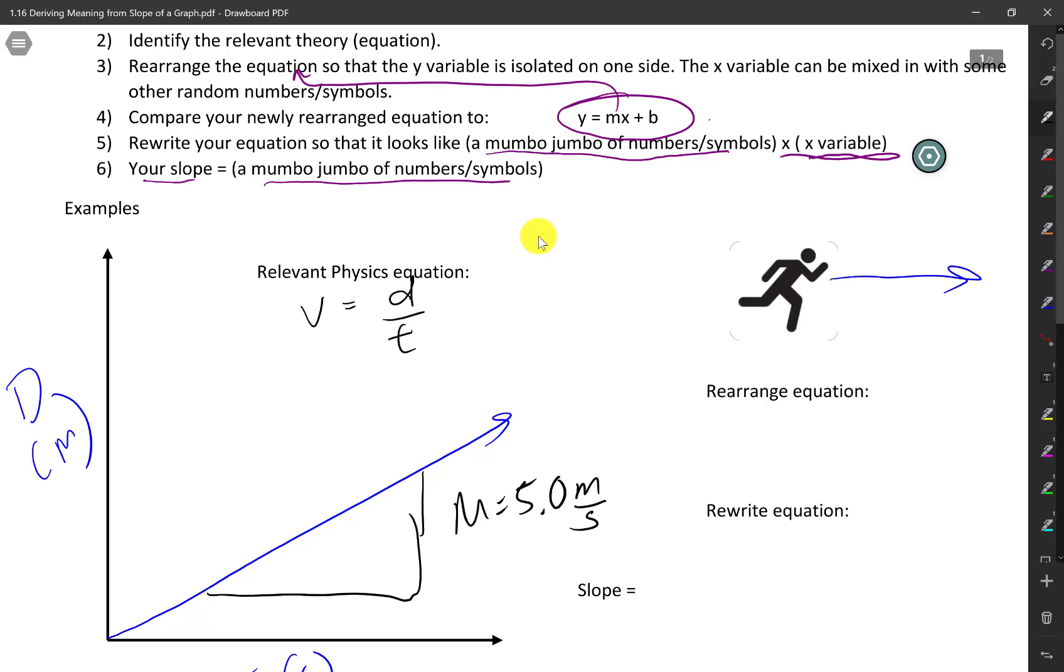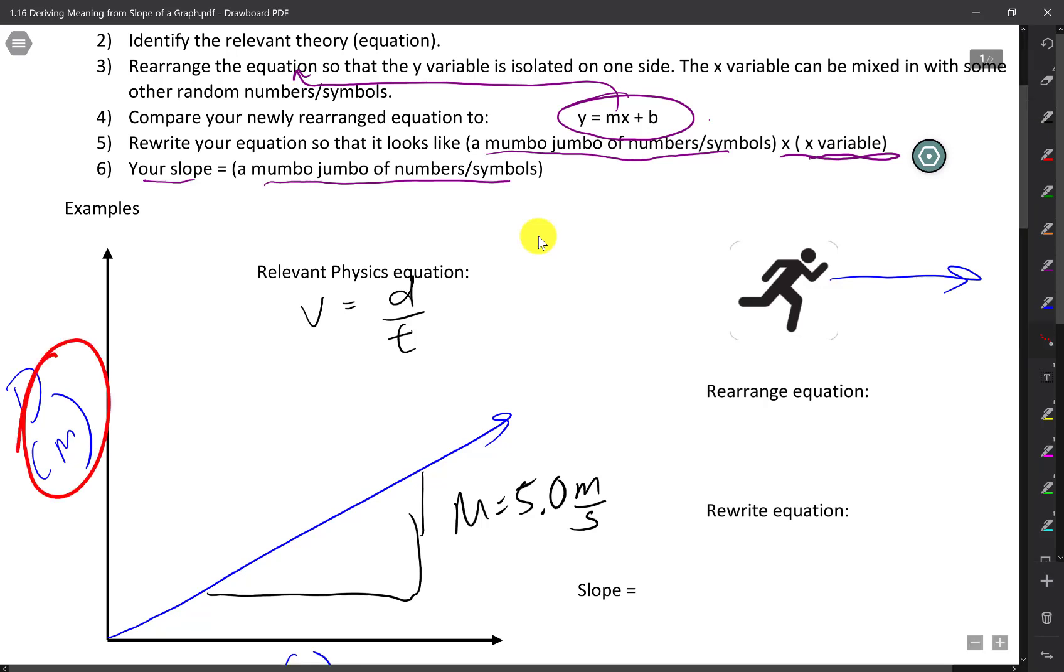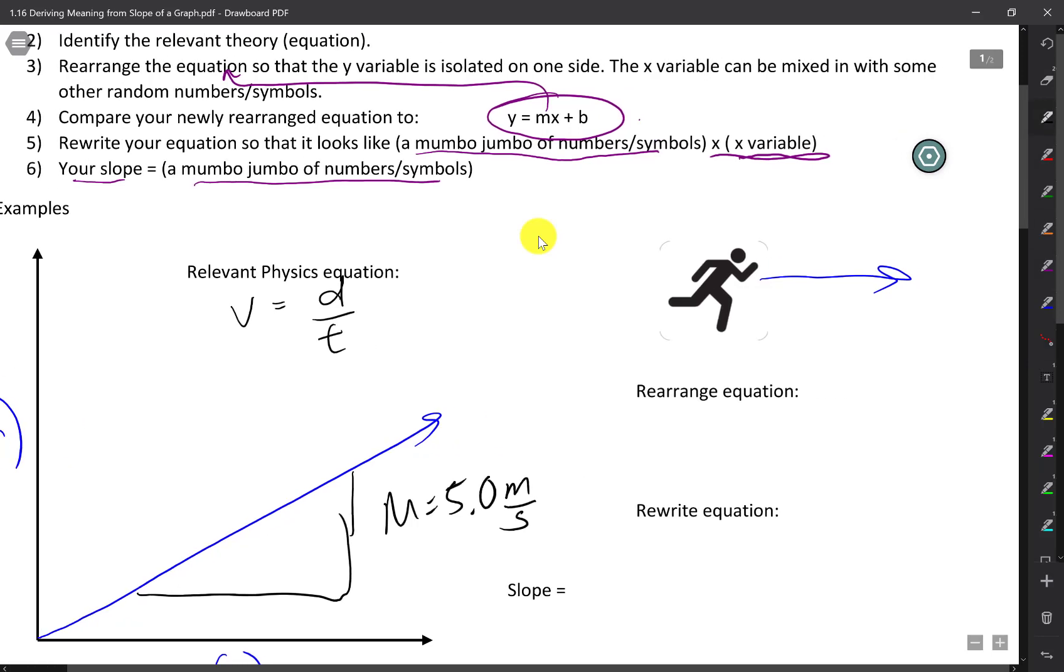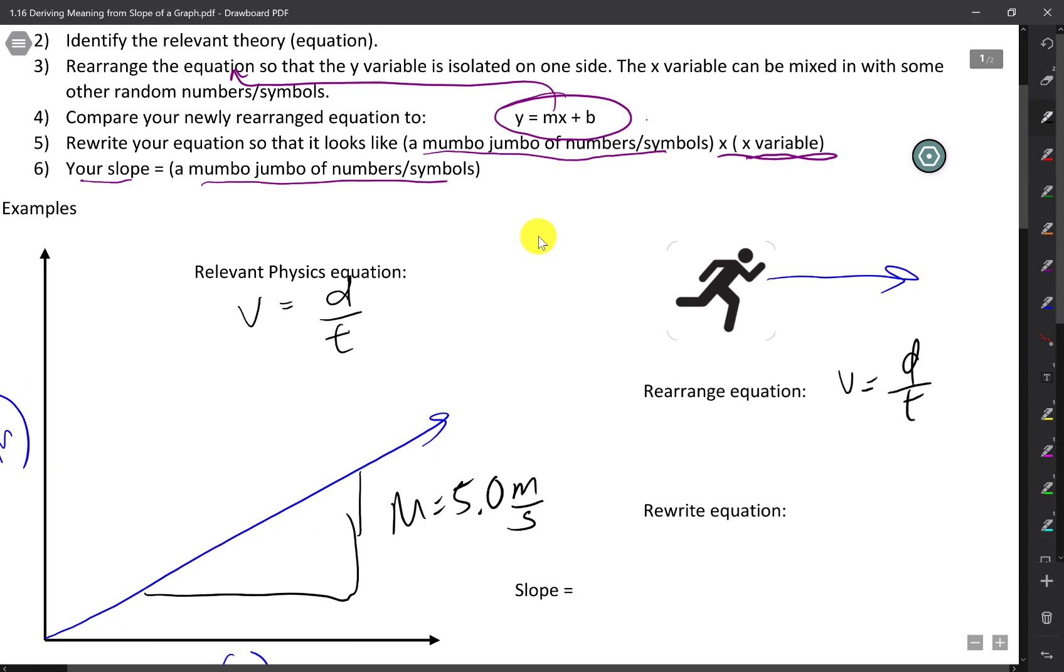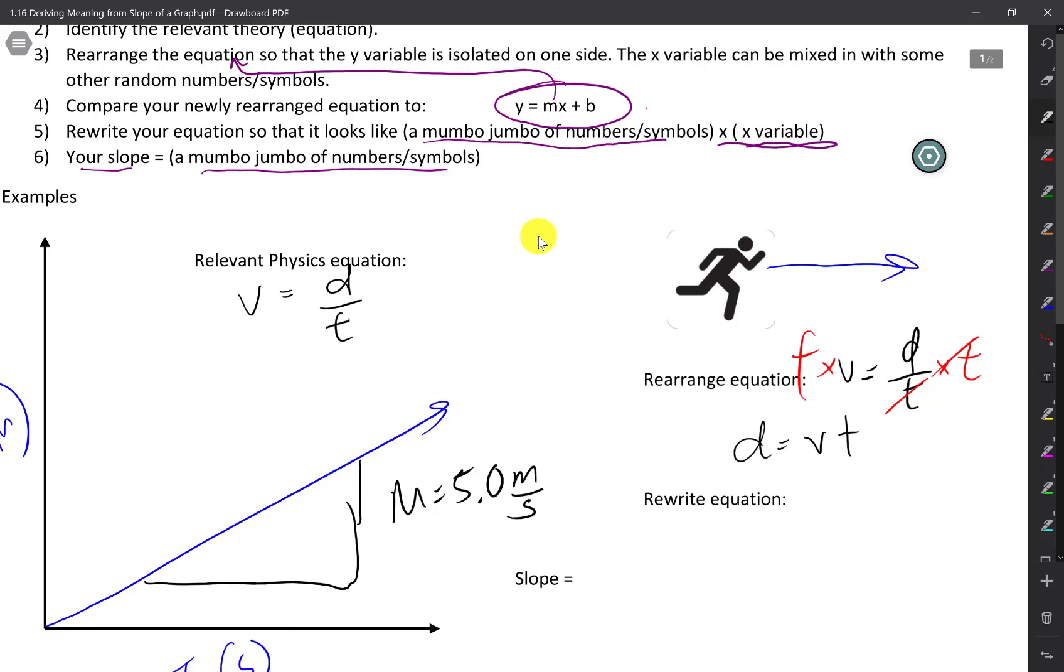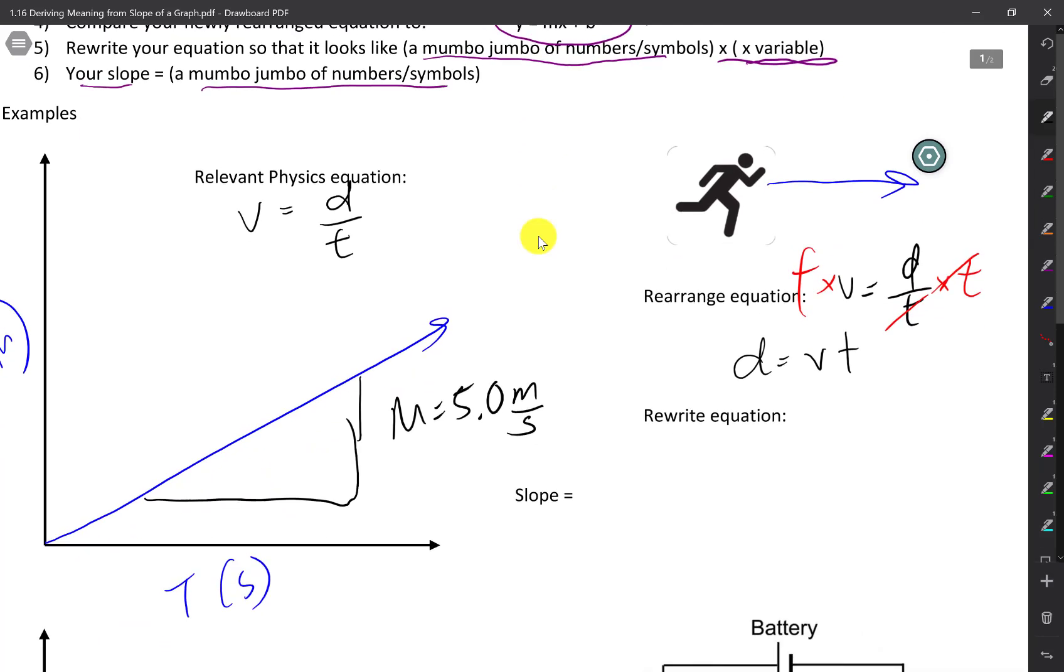Third step, you want to rearrange the equation so that the y variable is isolated on one side. What I mean by y variable, it means that the y variable on your y-axis in your equation is on one side of the equation. So you have to isolate for d, which is the d in your y-axis. We have v is equal to d over t. To isolate for this t on one side, we're going to multiply both sides by t. Getting rid of the t leaves us with d is equal to vt.